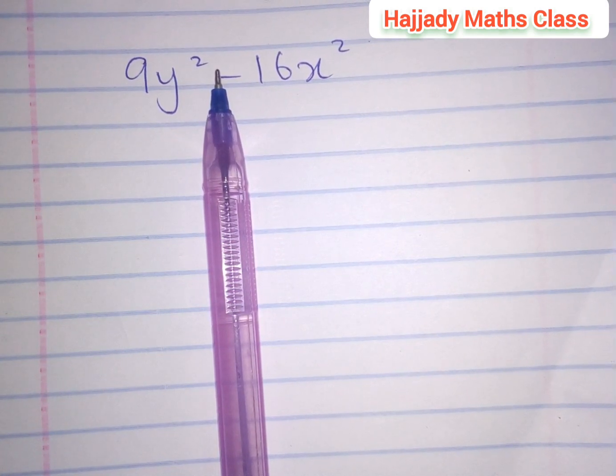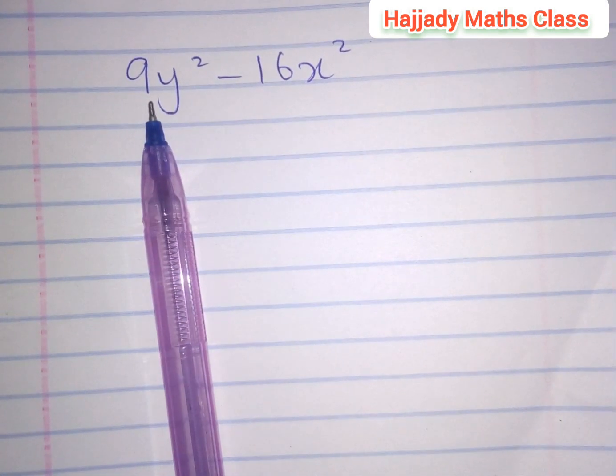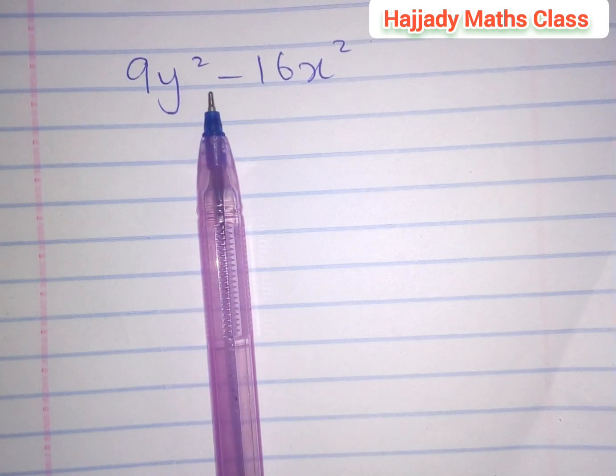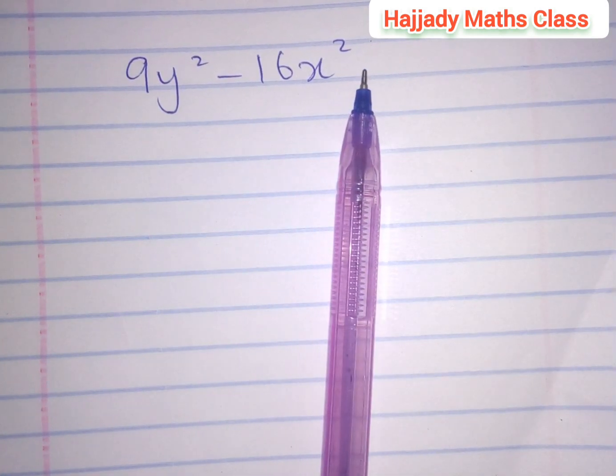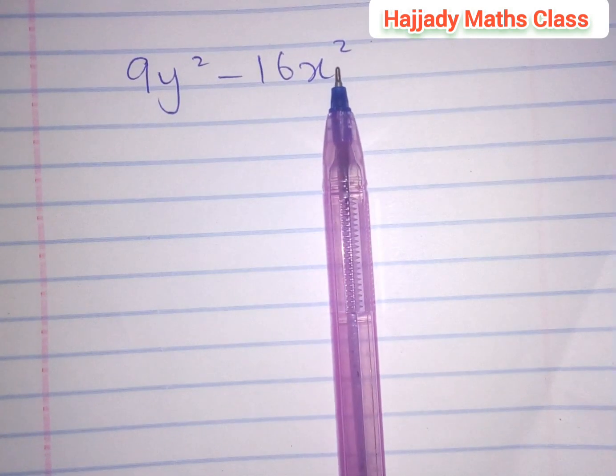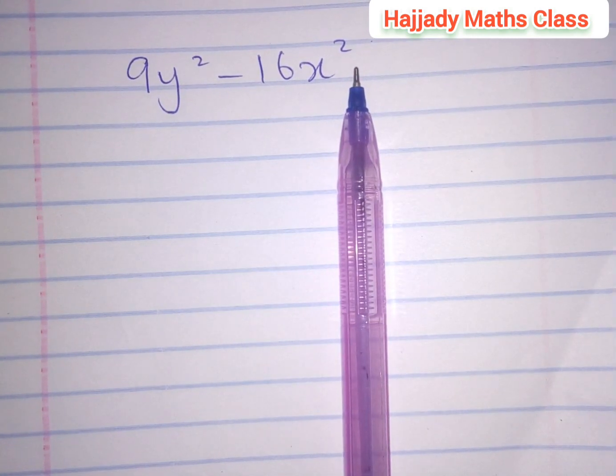Now, looking at this question we have today, simplify 9y² - 16x². In order for us to do this, looking at questions like this, this is difference of two squares and two things serve as a clue.